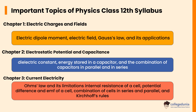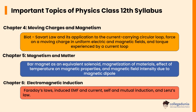In Chapter 3, Current Electricity, important topics are Ohm's Law and its limitations, internal resistance of a cell, potential difference and EMF of a cell, combination of cells in series and parallel, and Kirchhoff's rules. Chapter 4, Moving Charges and Magnetism, important topics are Biot-Savart Law and its application to the current-carrying circular loop, force on a moving charge in uniform electric and magnetic fields, and torque experienced by a current loop.